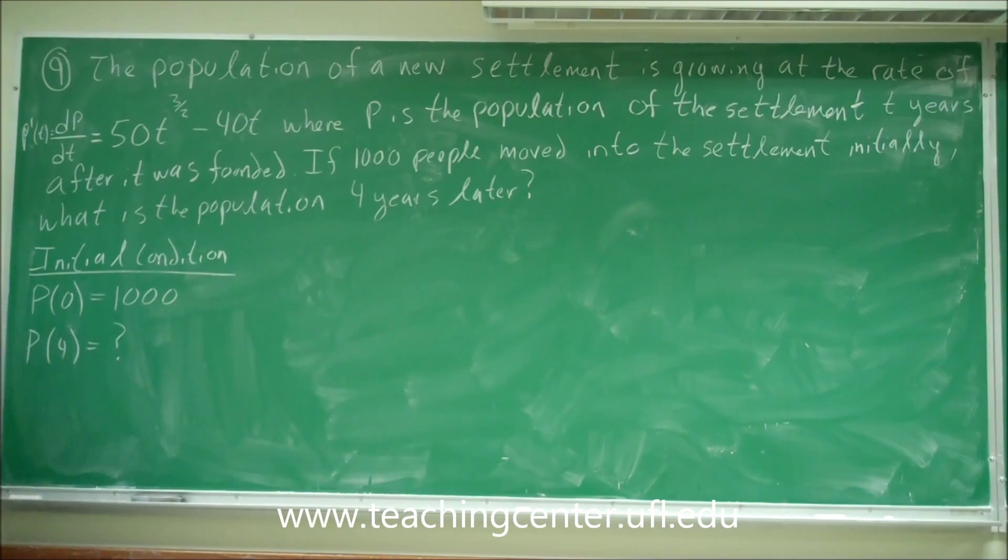p(4) is what? How many people? So with this given information, this p prime, we need to find the function p of x, or sorry, p of t in this case.